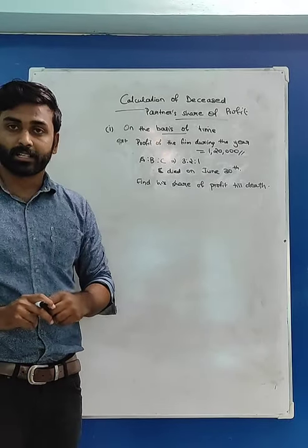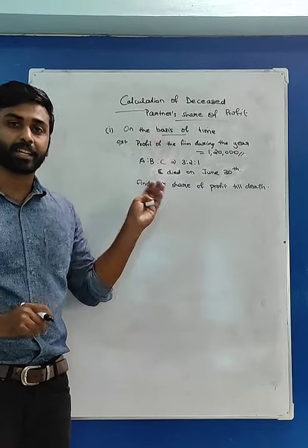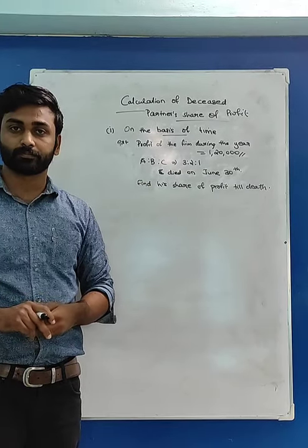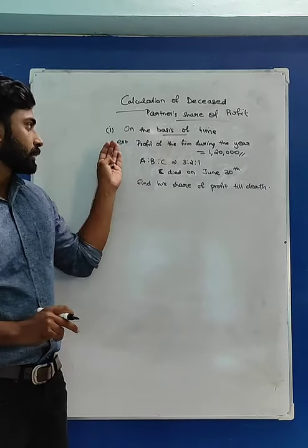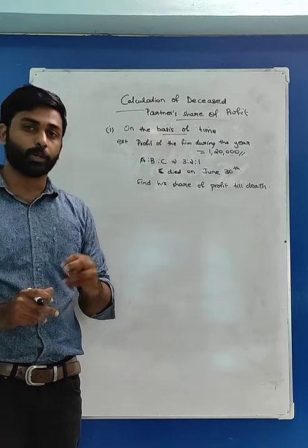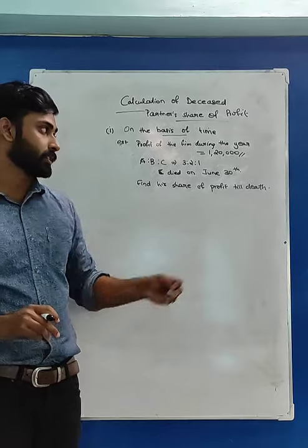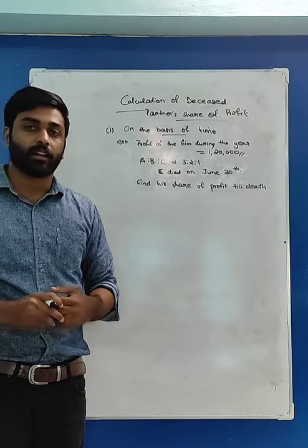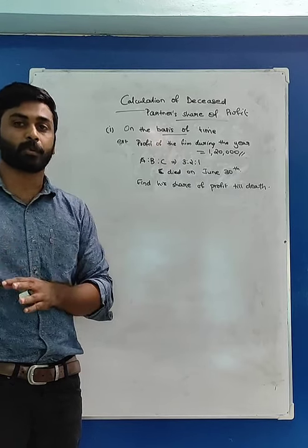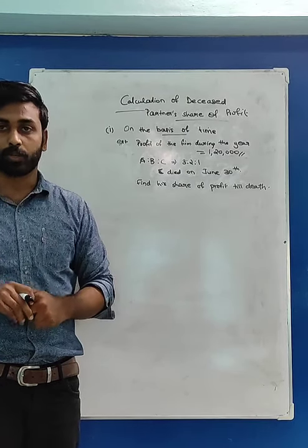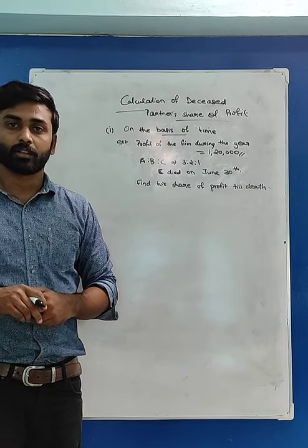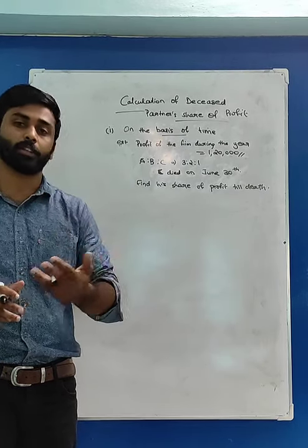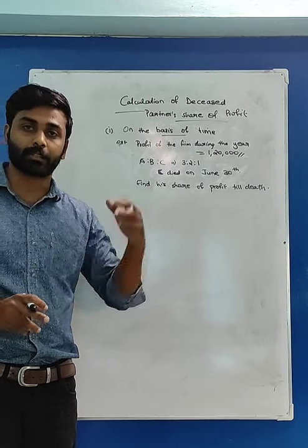ABC were partners. Their profit sharing ratio was 3 to 2 to 1. C died on June 30th. The profit of the firm during the previous year was 1,20,000, and we are assuming that we will earn this much profit this year also — so we can assume that this year the profit of the firm will be 1,20,000.